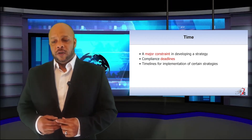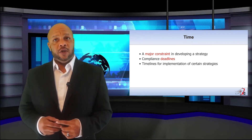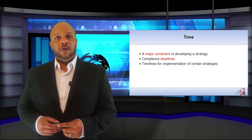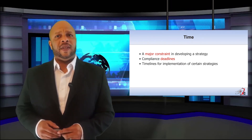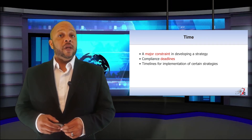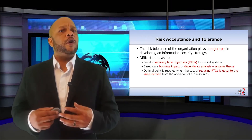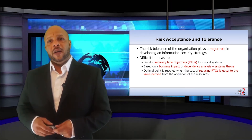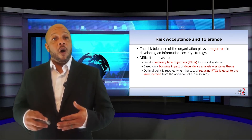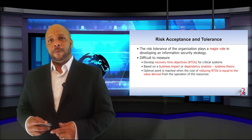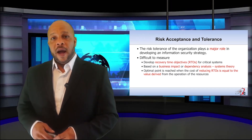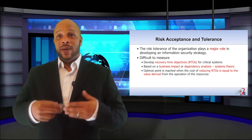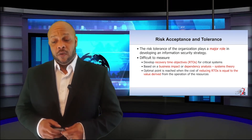One of the largest constraints in the development and implementation of our security strategy is time, often driven by compliance deadlines. This is especially true of organizations that have neglected security for any amount of time — coming back into compliance can be difficult and you'll often be racing against the clock. Risk tolerance or appetite for risk plays a major role in our strategy as a whole. It's often hard for an organization to truly identify their tolerance for risk because it's difficult to measure. You often need to develop your recovery time objective for critical systems first, based on the business impact or dependency analysis.